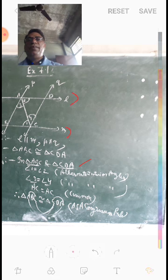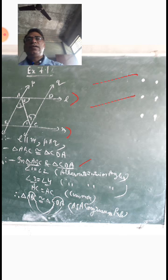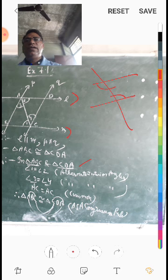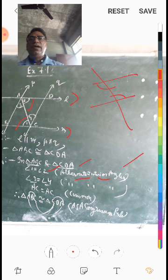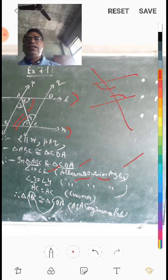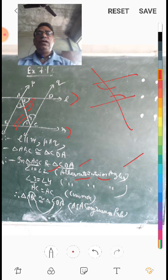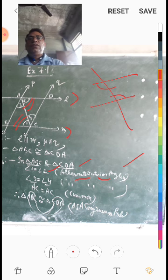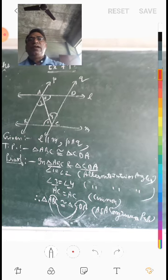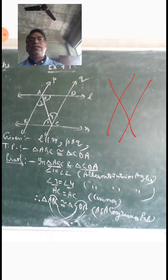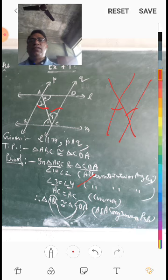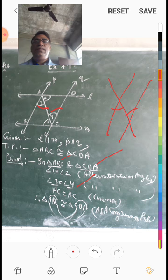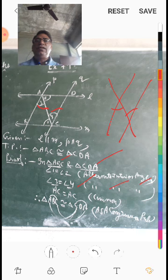Because lines L and M are parallel and the transversal cuts between them, we get alternate interior angles that are equal. Angle 1 equals angle 2 — reason: Alternate Interior Angles. Angle 3 equals angle 4 — reason: Alternate Interior Angles.